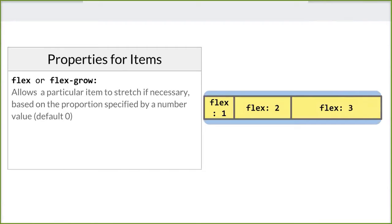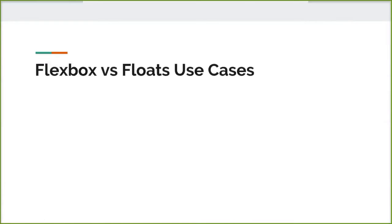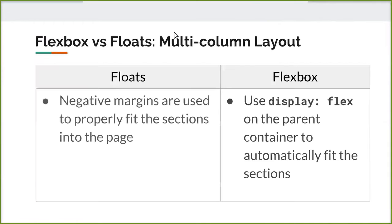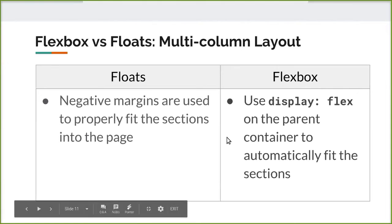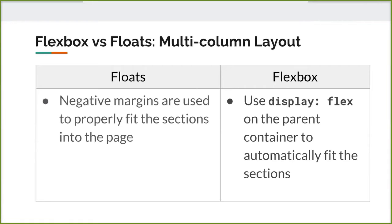Knowing all these properties, we can begin with our examples. I'm going to go through three use cases. First, I want to demonstrate how you can use floats or Flexbox in a multi-column layout. For floats, we pretty much just have to use negative margins — that's part of the way we position elements properly when using floats. With Flexbox it's a lot easier because we can just specify display: flex on the parent container.